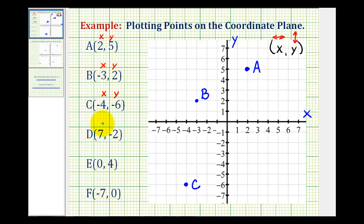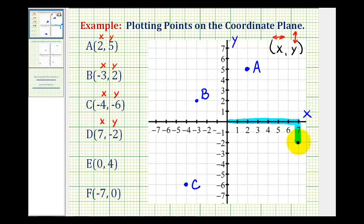Point D has an x-coordinate of positive seven and a y-coordinate of negative two. So we'll start at the origin and move right seven units because the x-coordinate is positive seven, and then move down two units because the y-coordinate is negative two. Here's the location of point D.